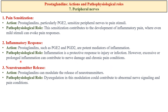However, excessive inflammation can contribute to nerve damage and chronic pain. Prostaglandins can also modulate the release of neurotransmitters in the peripheral nerves, contributing to abnormal nerve signaling and pain conditions. They may influence the release of substances such as substance P, which plays a role in transmitting pain signals. The modulation of neurotransmitter release contributes to communication between nerves and can impact pain perception.